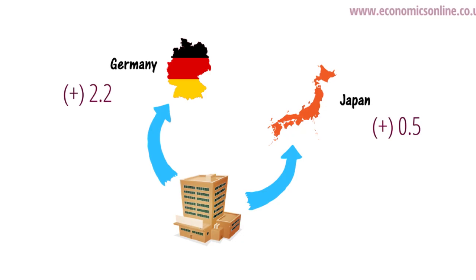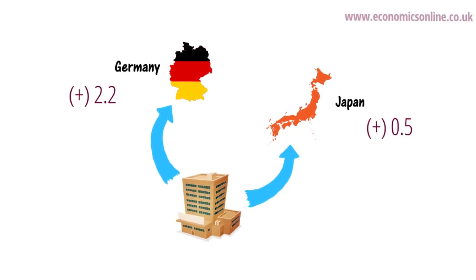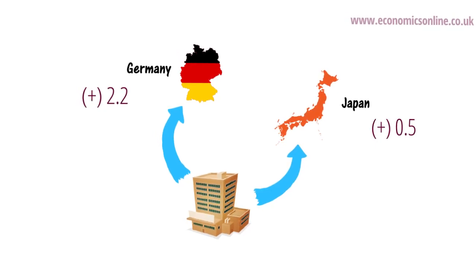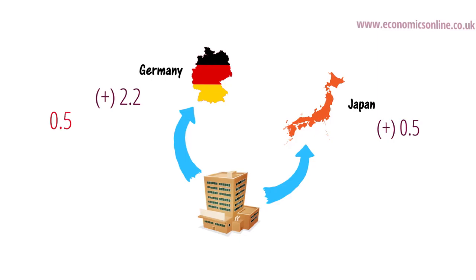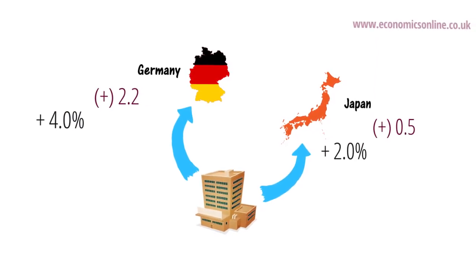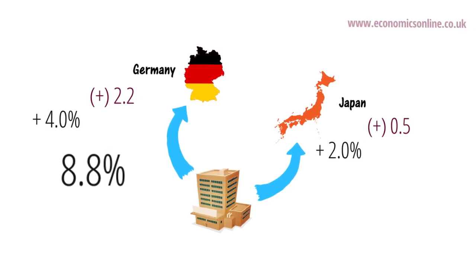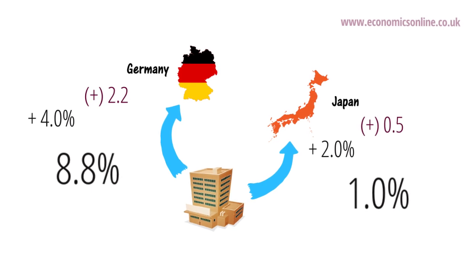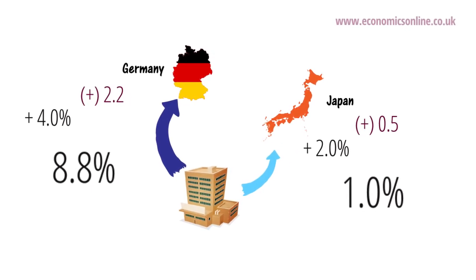then the firm can predict sales following changes in consumer incomes in Germany and Japan. If incomes are forecast to rise by 4% in Germany and by only 2% in Japan, then demand in Germany will increase by 8.8% and in Japan by only 1%. This is highly significant and the firm can target more resources to the growing market in Germany.